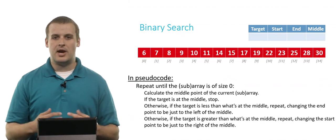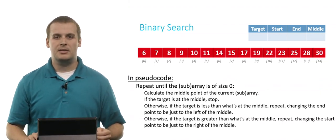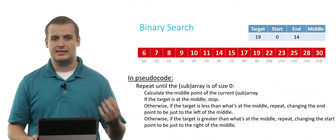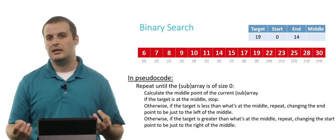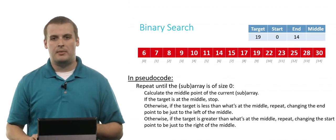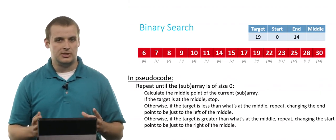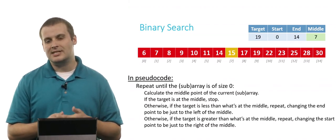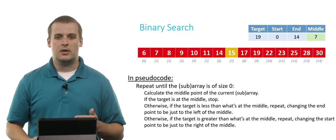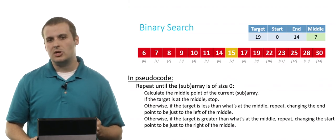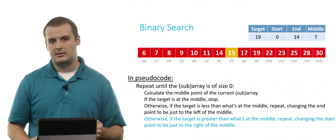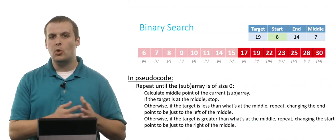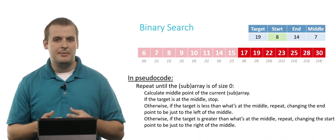Let's repeat the process step by step. We're looking for the value 19. The first element is at index 0 and the last is at index 14 — those are our start and end. We calculate the midpoint: 0 plus 14 divided by 2 is 7. Is 15 what we're looking for? No, we're looking for 19, and 19 is greater than 15. So we change the start point to just to the right of the midpoint — new start point is array location 8. We've effectively ignored everything to the left of 15, eliminating half of the problem.